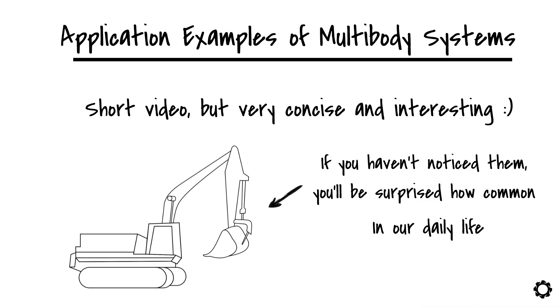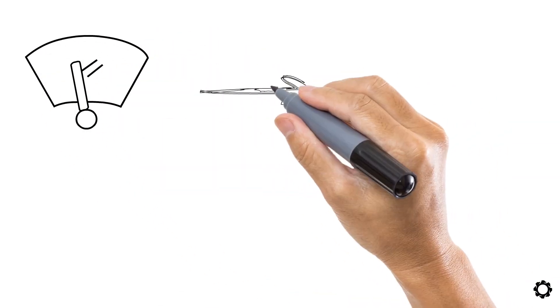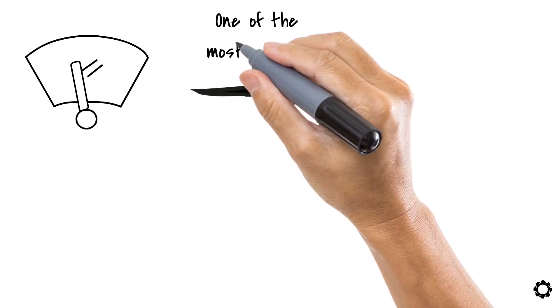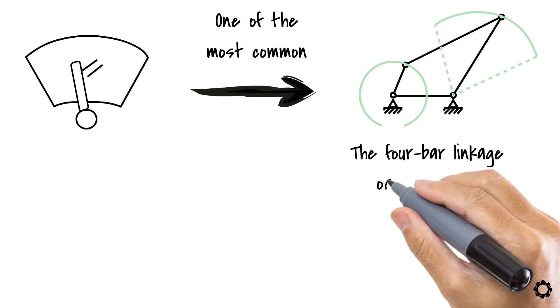Let's take a look at some of them. Let's start with one of the simplest ones, the windshield wiper mechanism in a car. Let me tell you that this windshield wiper mechanism is based on one of the most common multibody systems. The 4-bar linkage or mechanism.